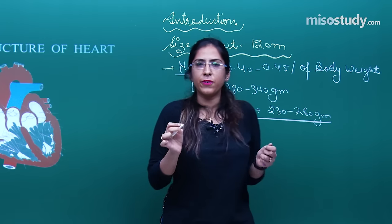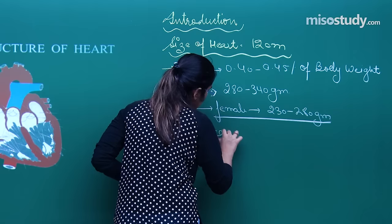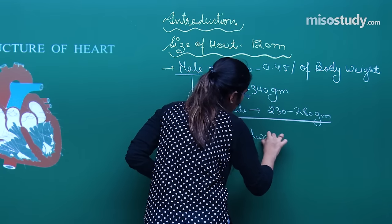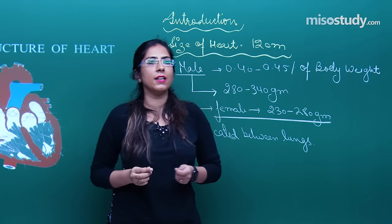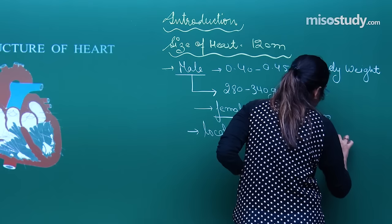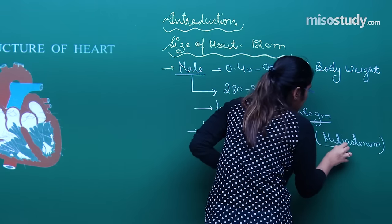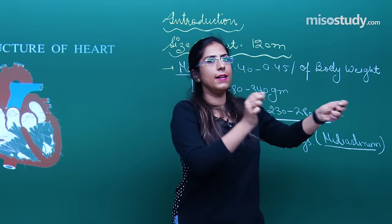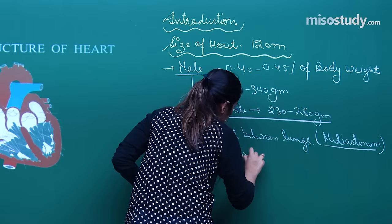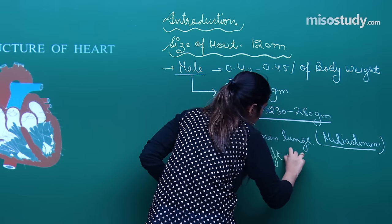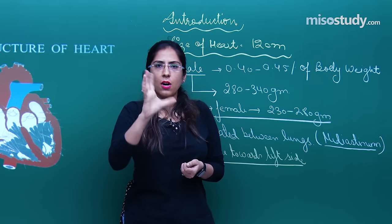The question arises: where is the heart located? The heart is located in between the lungs. It is located in between the lungs in the mediastinum, in which it is present. It is more towards the left side — it is tilted towards the left side.